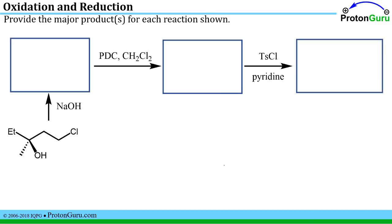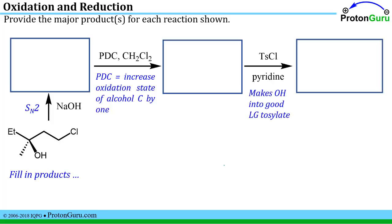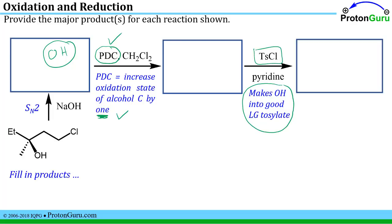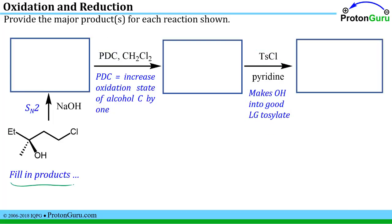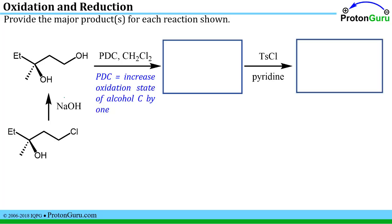As with other recent ProtonGuru video practices, we now incorporate these new reactions into multi-step reaction strings, like this three-step reaction. It helps to figure out what kind of reaction each step could be. PDC is uniquely associated with increasing the oxidation state of an alcohol by one, so the starting material should be an alcohol. Tosyl chloride is used to convert an OH into a good leaving group — a tosylate. The first step is an SN2 reaction because we have a primary species with a good leaving group and a good nucleophile; the other stereocenter is not affected because its OH was not activated as a leaving group.